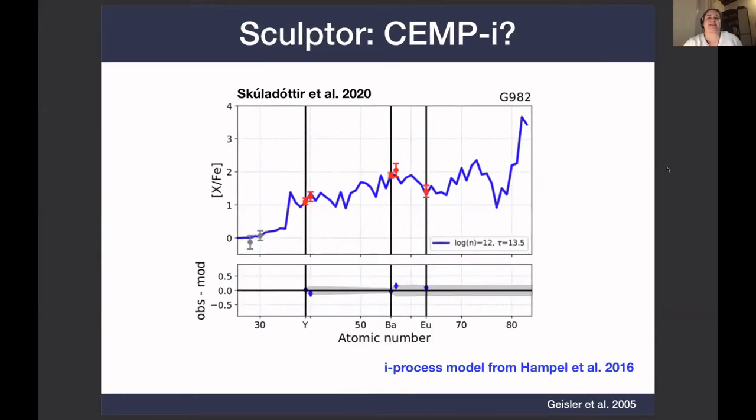Here is one such star in Sculptor, which is clearly not a pure CEMP-s star, and was very successfully matched with an i-process pattern, but the limited abundance measurements make it difficult to draw very strong conclusions, whether this is an i or an r plus s. And the observer's favorite mantra applies here, as always, we need more and we need better data.